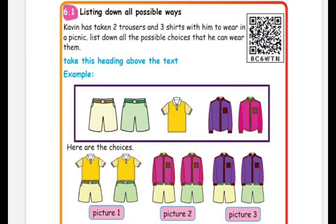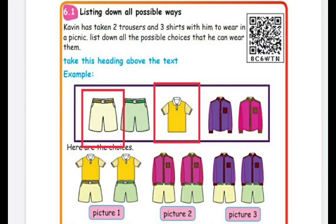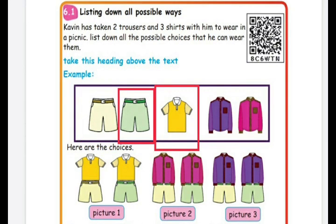One shirt is yellow, one shirt is purple, and one shirt is pink. The two shorts are sandal color and green color. First, let us choose the yellow shirt. For the yellow shirt, he can either wear sandal shorts — yellow shirt and sandal shorts — or he can change to green shorts — yellow shirt and green shorts. So we have found two ways so far.